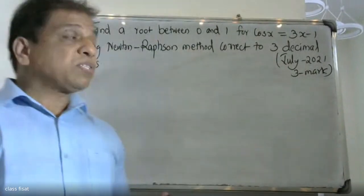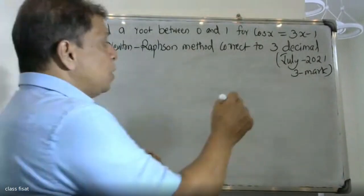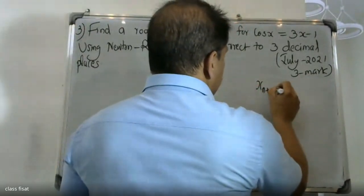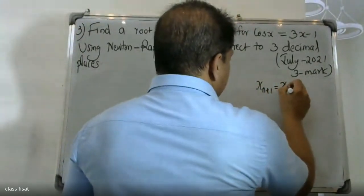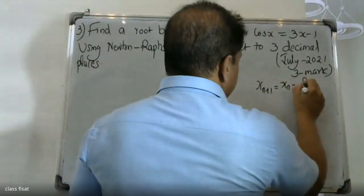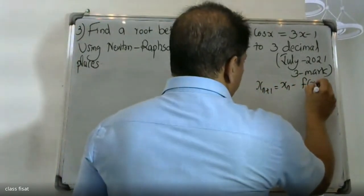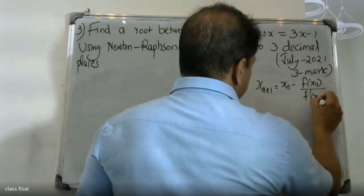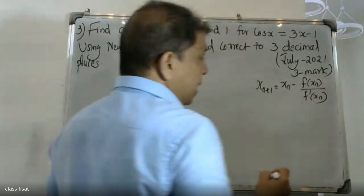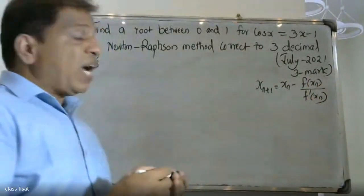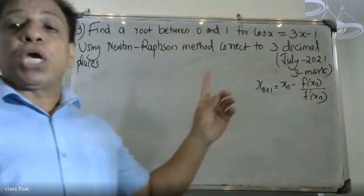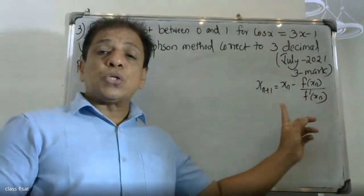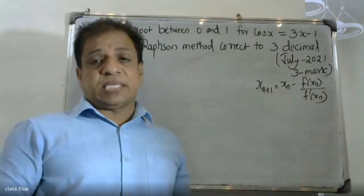The Newton-Raphson method formula is: x_{n+1} is equal to x_n minus f of x_n divided by f dash x_n, where f dash x_n is not equal to 0, and n takes values 0, 1, 2, 3, etc.